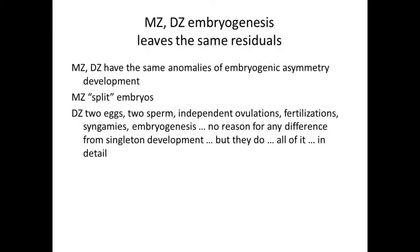So monozygotic and dizygotic embryogenesis leaves the same residuals. The MZ has to split an embryo while DZs are doing the same thing somehow—they have to come from a single mass of cells. Dizygotic twins are supposed to come from two eggs, two sperm, independent ovulations, independent fertilization, independent embryogenesis, with no reason for any difference from singleton development. But they differ from singletons every bit as much as monozygotics. Dizygotic twins are absolutely as odd as monozygotic twins in terms of their embryogenesis.